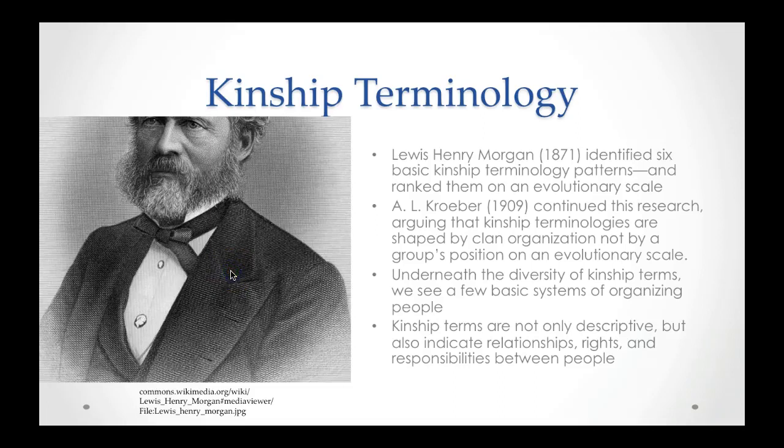When we start talking about families, we have to have a way to talk about them. Lewis Henry Morgan, if you'll remember, is one of the evolutionist anthropologists. He identified six basic kinship terminology patterns, but they were ranked on an evolutionary scale — that was his prerogative with evolutionism, to rank everything. So he's ranking kinship. But then Kroeber comes along and continues research on kinship terms and how people understand their kin relationships.